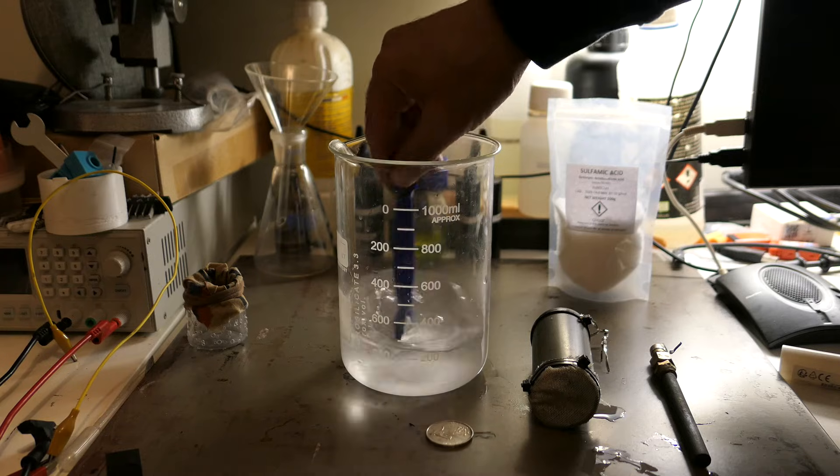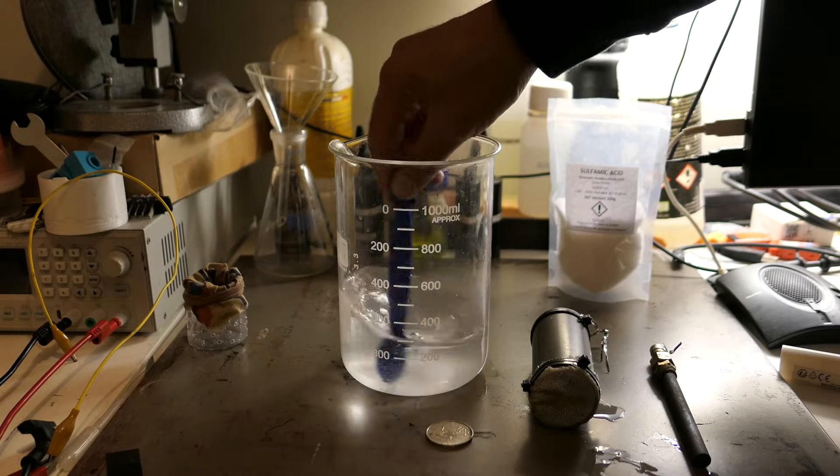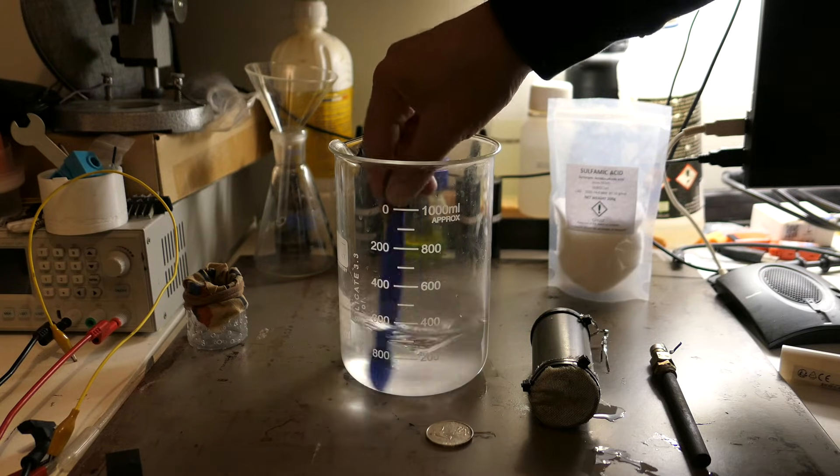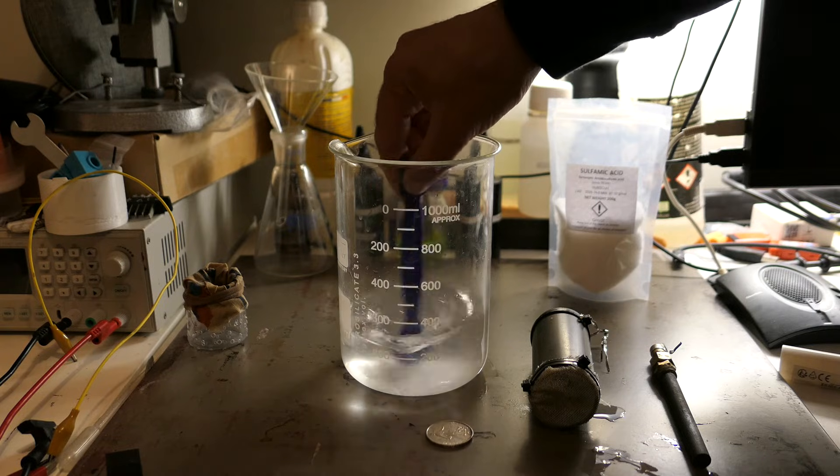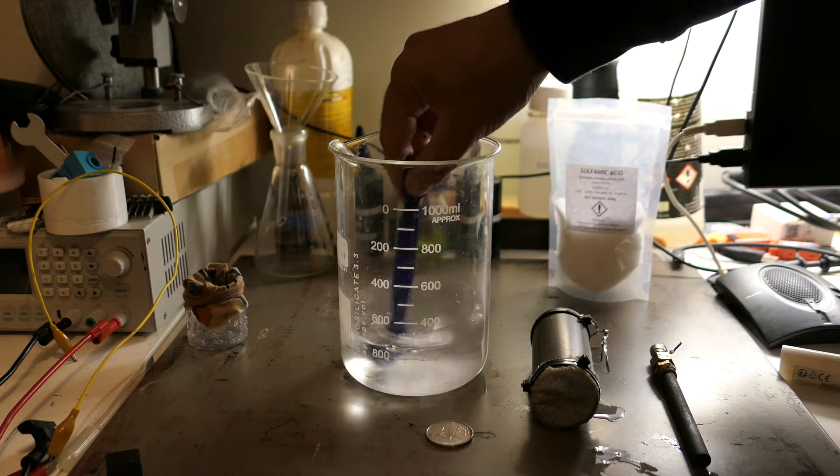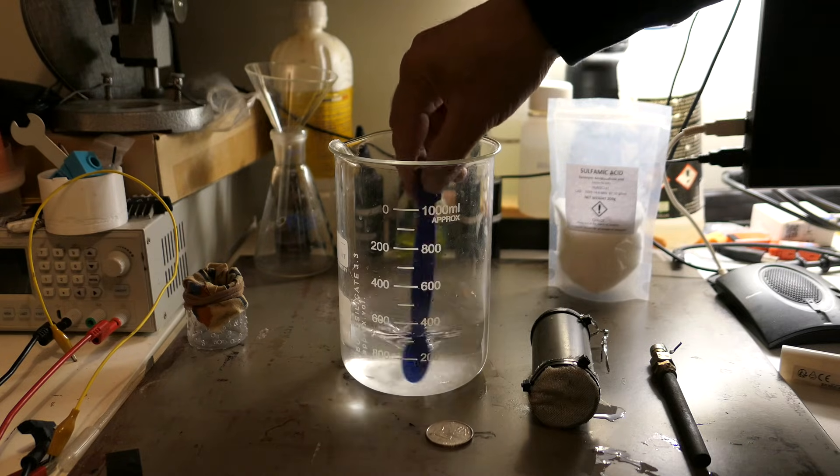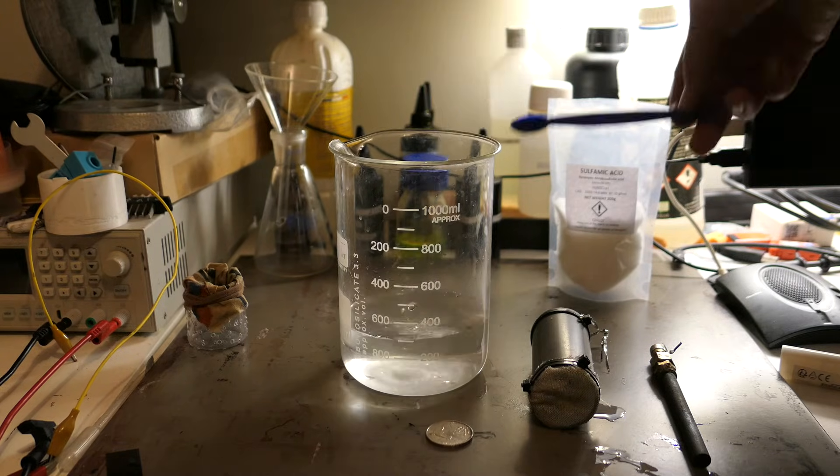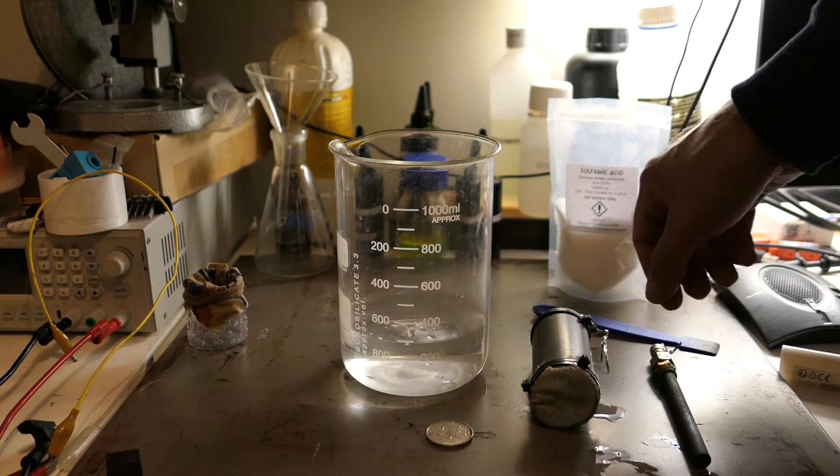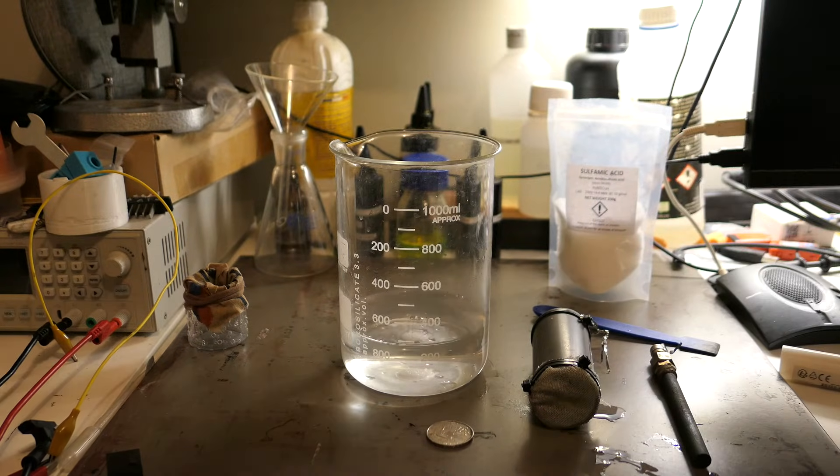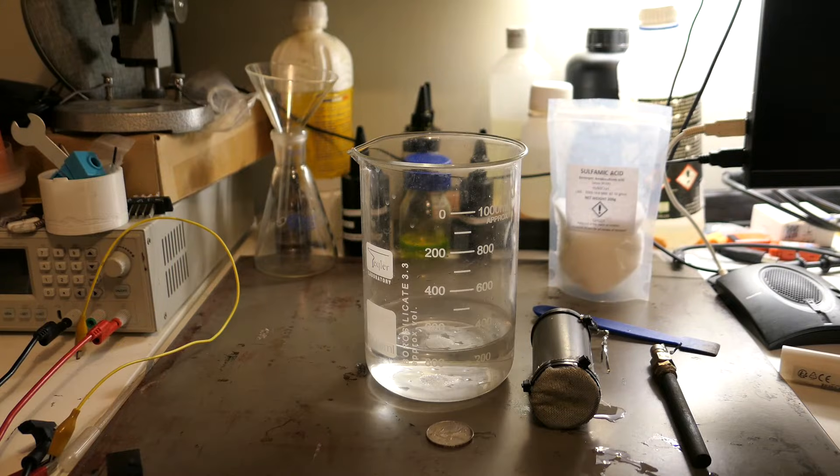Now the issue with the classic method is that it relies on nitric acid and silver nitrate. These chemicals can be expensive, hard to find, and not the friendliest to handle. Nitric acid in particular is quite corrosive and needs to be handled with care. So what if we could refine silver without needing those chemicals?